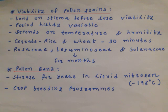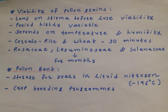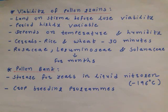As we know, through the mechanism of pollination, pollen grains travel towards the stigma of the flower for sexual reproduction. Now, what about viability of pollen grains? Viability means the time period for which it can survive and remain living for the purpose of fertilization. Generally, pollen grains land on the stigma before they lose their viability. This time period is highly variable from species to species and also depends on temperature and humidity.